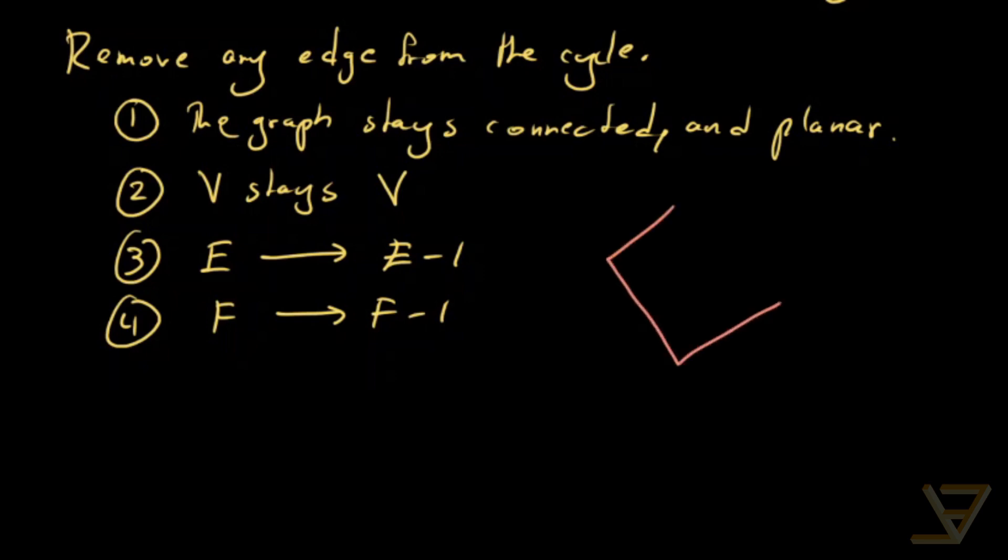Suppose we have a cycle like this, then any particular edge on the cycle, and this is not true in general. Like, we can have an edge like this where both sides lie on the same, it's adjacent to the same face.